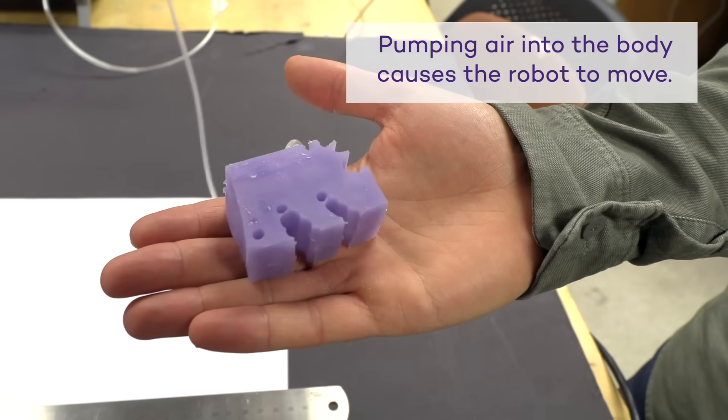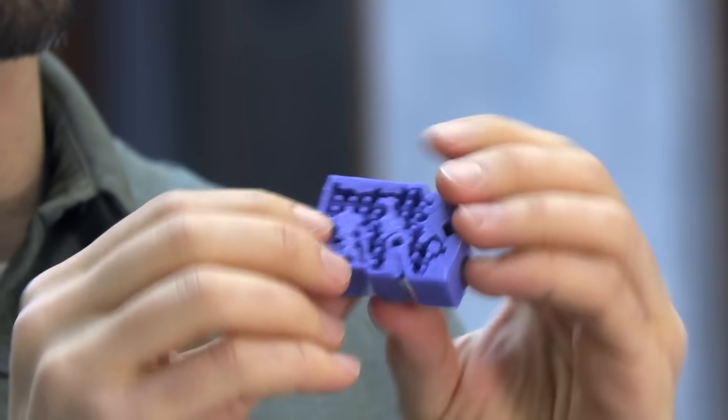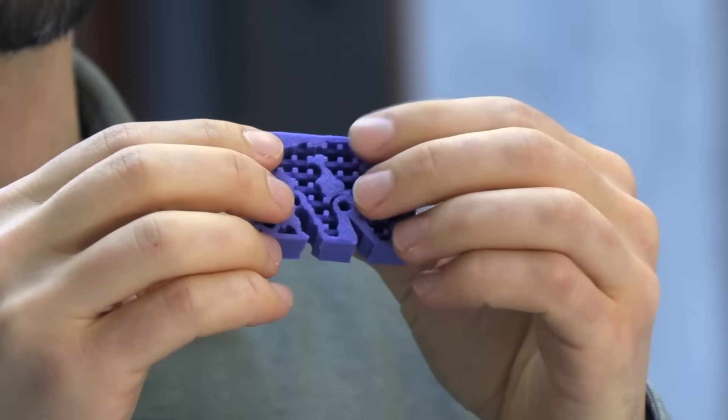This robot moves with air muscles. The placement of these muscles inside of the body, combined with the overall shape of the robot, causes it to move forward.